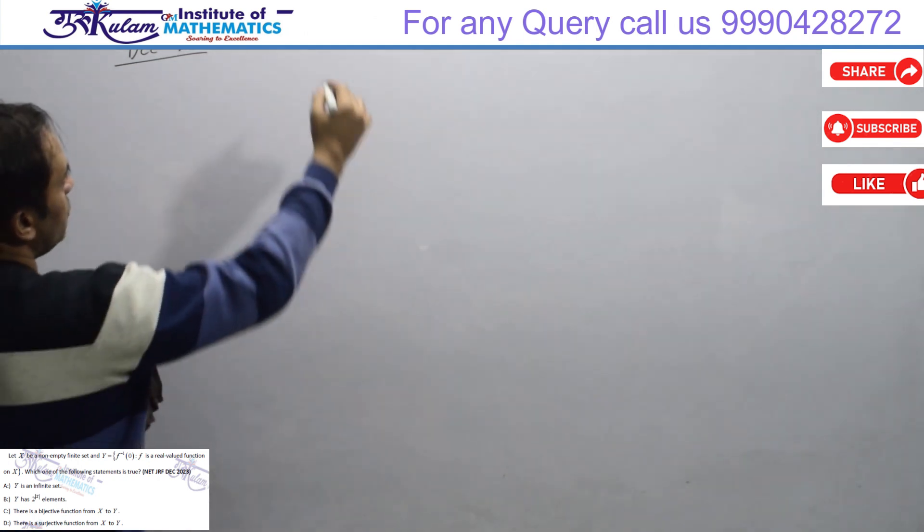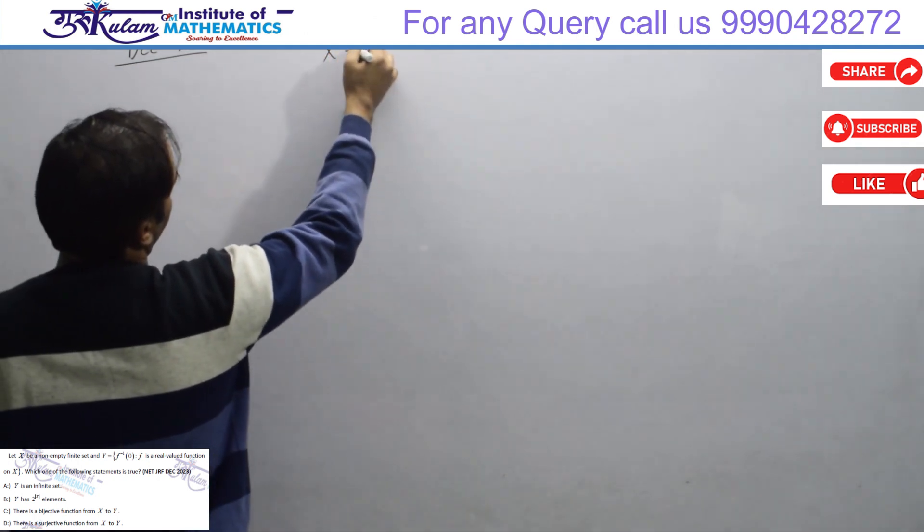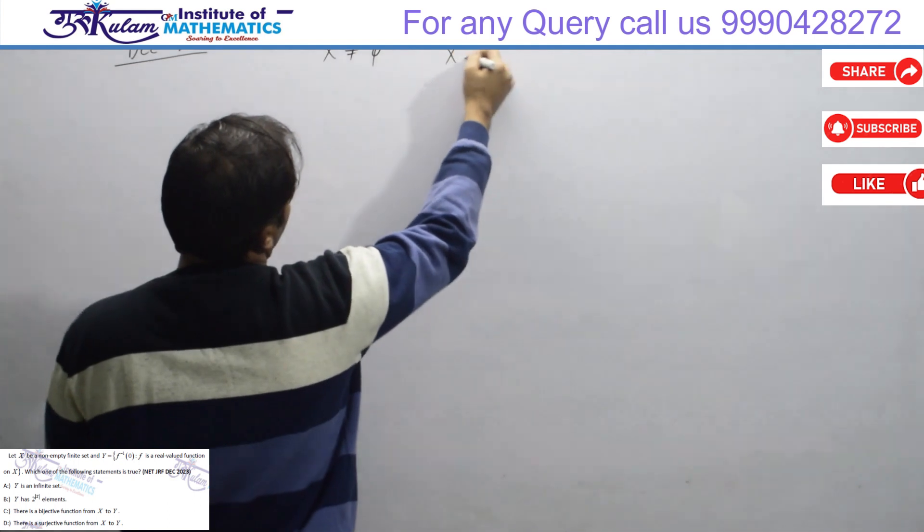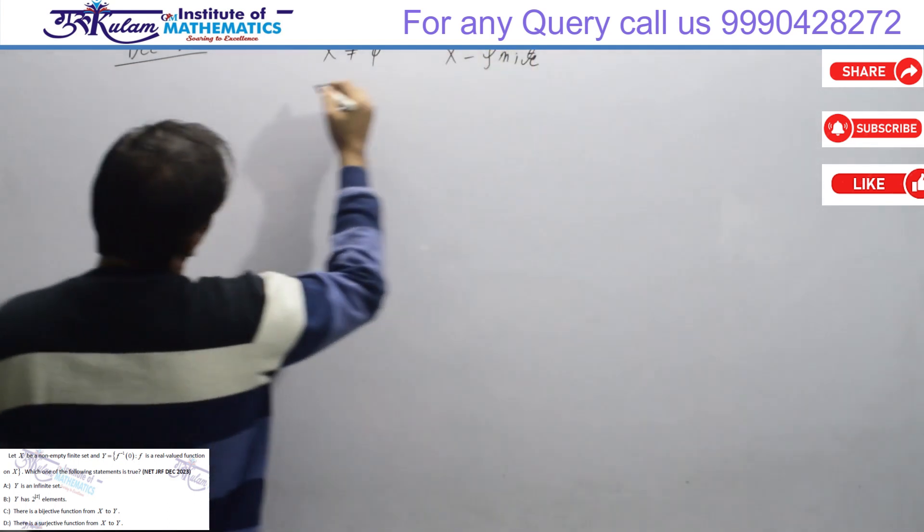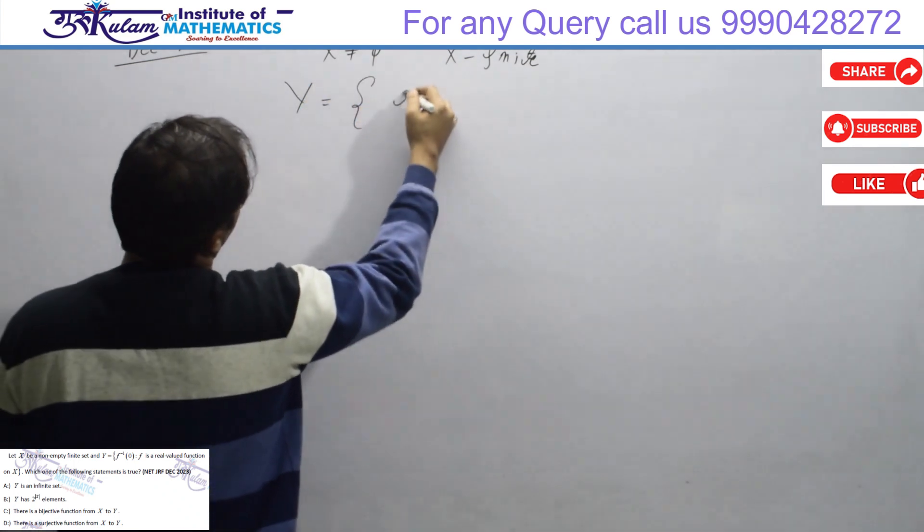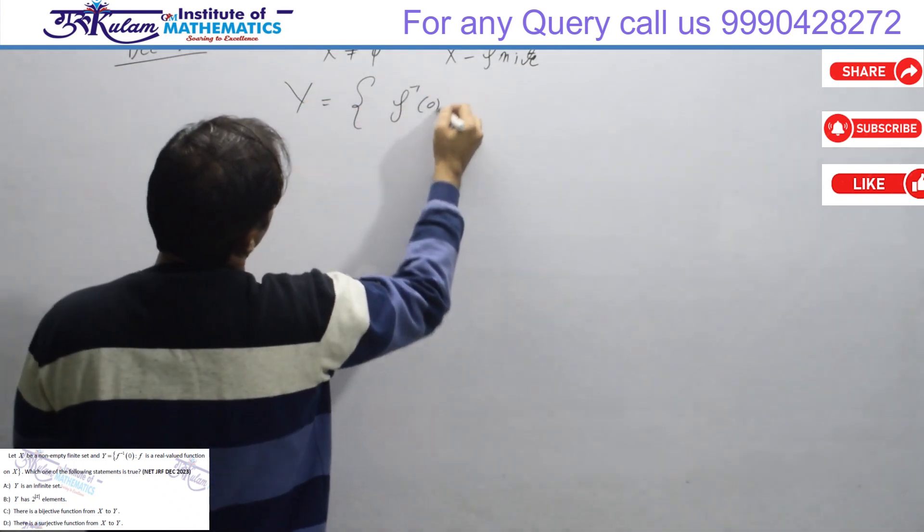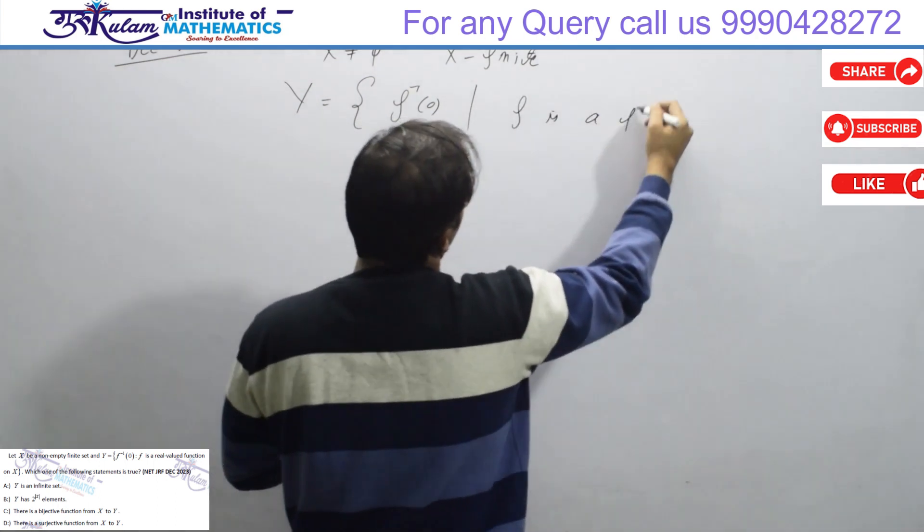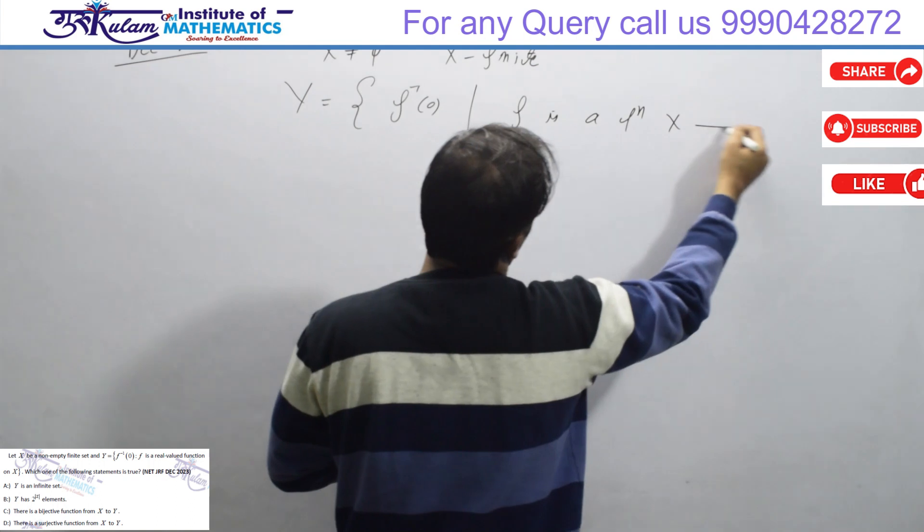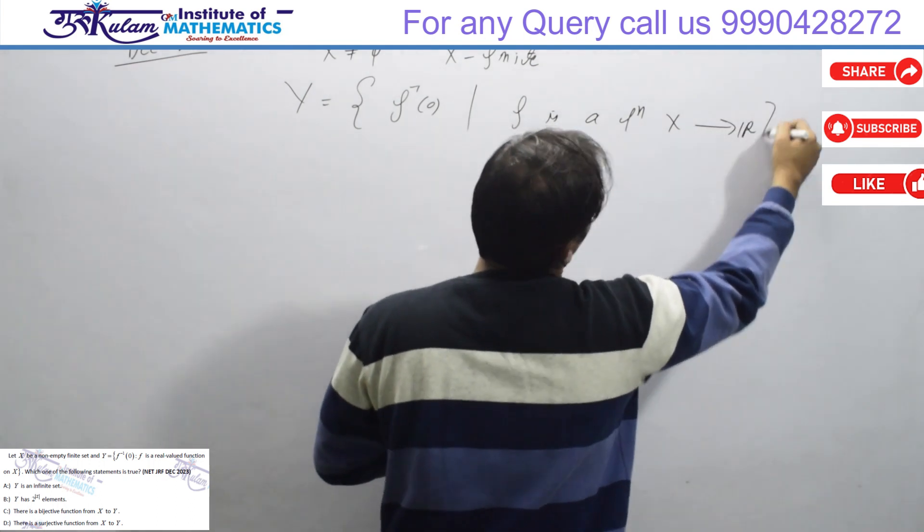X is a non-empty finite set and Y is the set defined as f inverse of 0, where f is a function from X to R, real valued function.